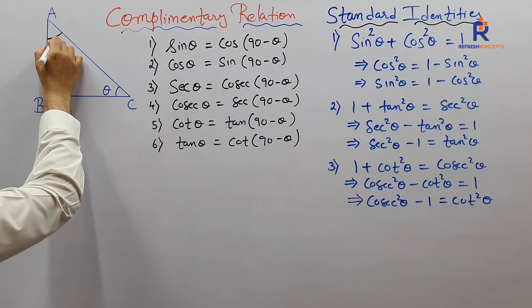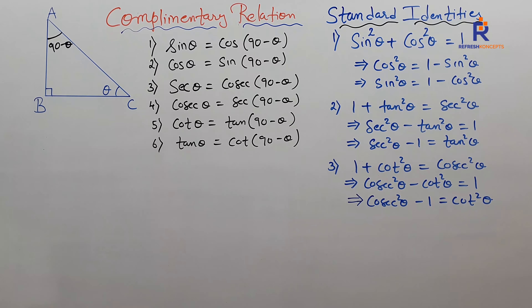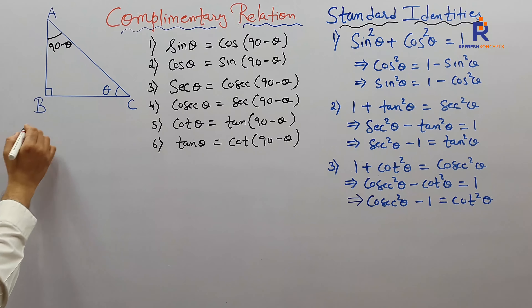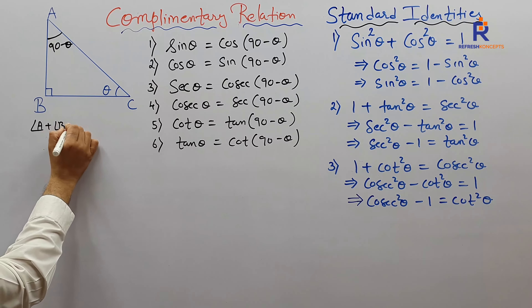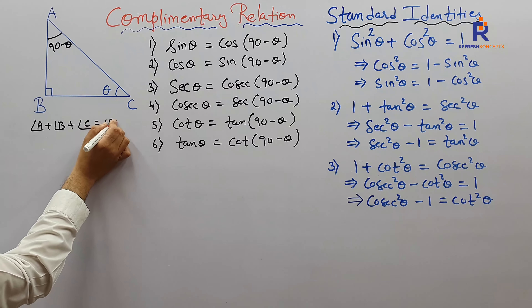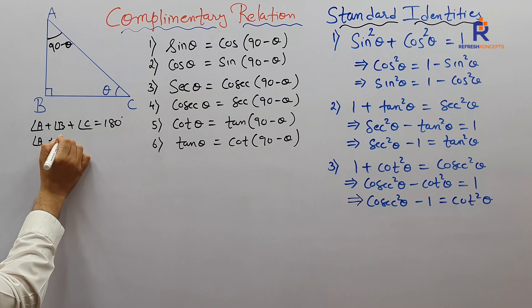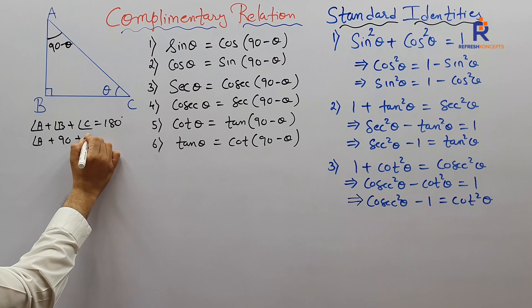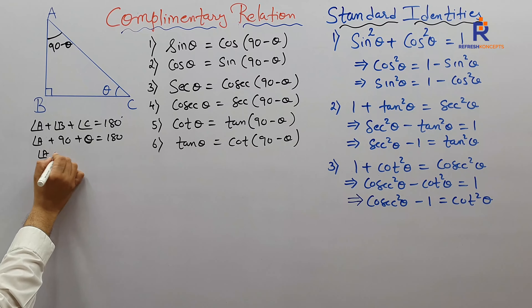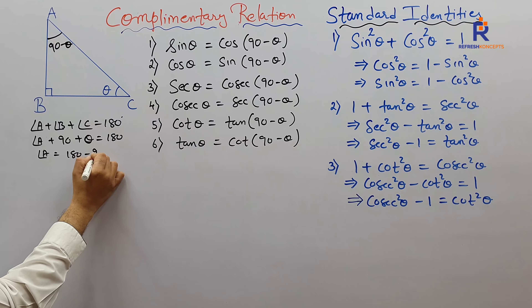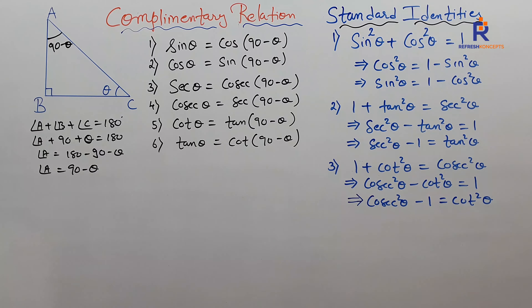Angle A is 90 minus theta. For those who have a query about how this came — here is the answer: angle A plus angle B plus angle C equals 180, because the sum of all angles in a triangle is 180. Angle B is 90, angle C is theta, so angle A is 180 minus 90 minus theta, which gives angle A equals 90 minus theta.